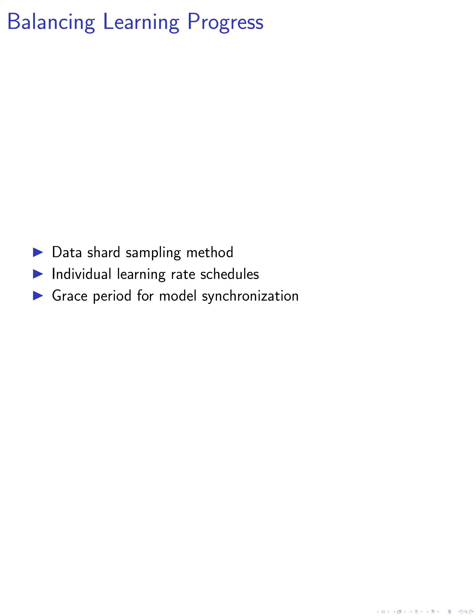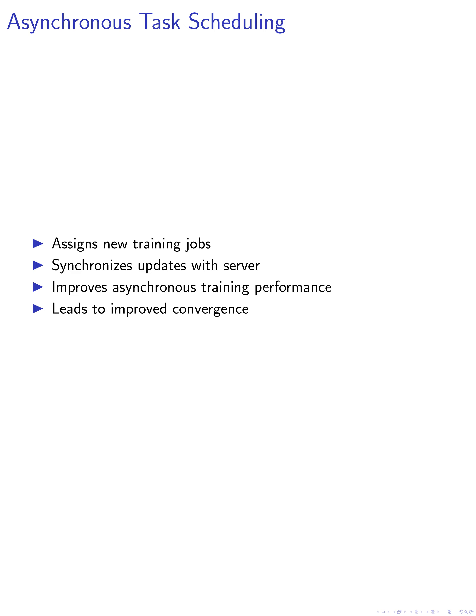We introduce a grace period for model synchronization, where workers wait to process updates from other workers before receiving the updated model for their next training task. Lastly, we present an asynchronous task scheduling pipeline that assigns new training jobs for completed workers and synchronizes updates with the server model when necessary.